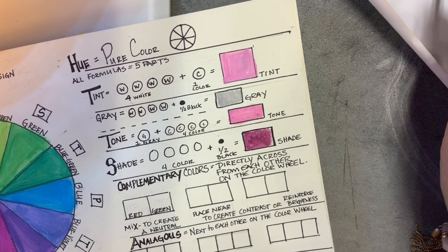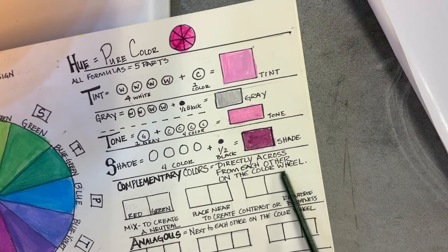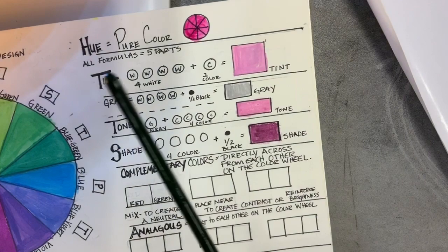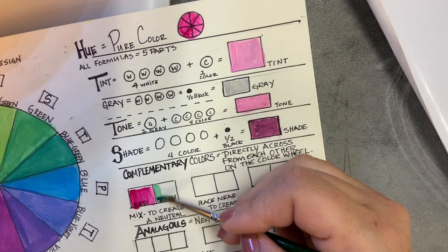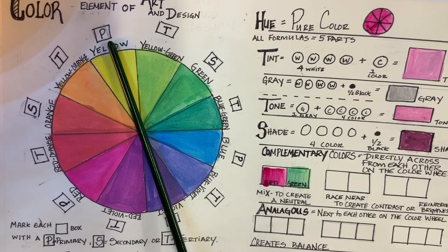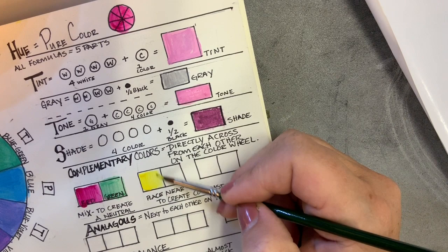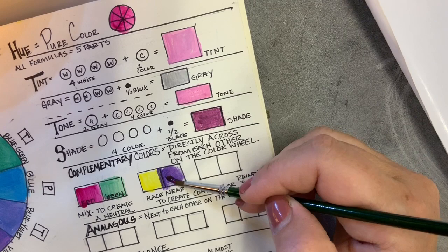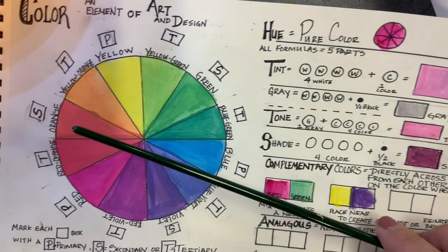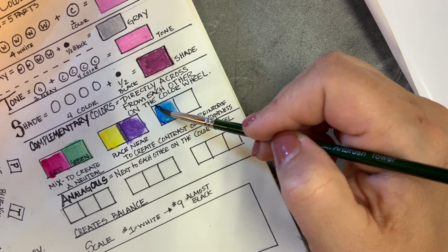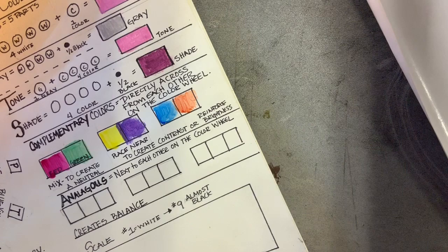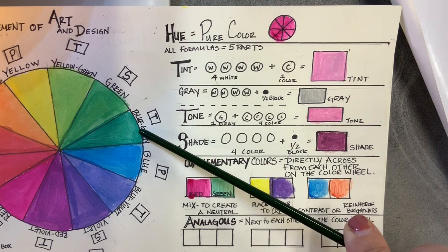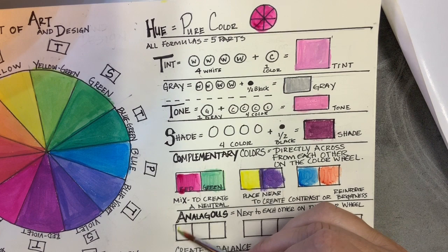Excellent, so those are our hues, tints, tones, and shades. Now we're on to complementary colors. Those are colors directly across from each other on the color wheel, so red and green. And then I'm going to have you fill in the other two with any other colors that are directly across from each other. Here I'm doing yellow and purple. If you mix two compliments together, you will get kind of a neutral or muddy tone. But if you place them next to each other, then you create contrast or you reinforce the brightness of those two colors. You'll often see those colors used in sports teams. If we think of that yellow and violet, like the Minnesota Vikings.